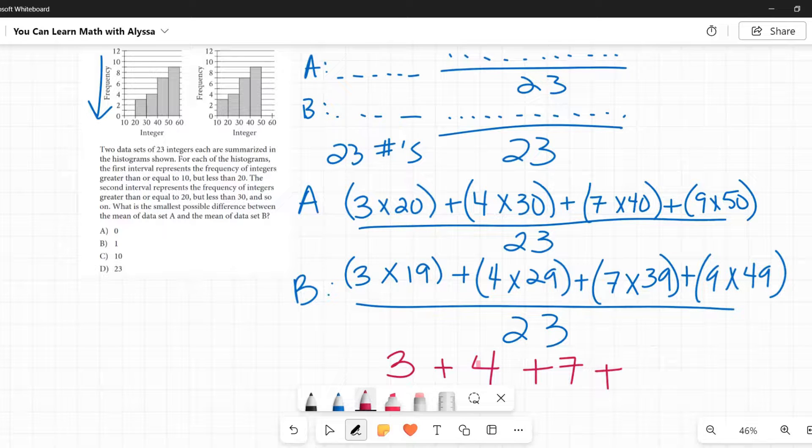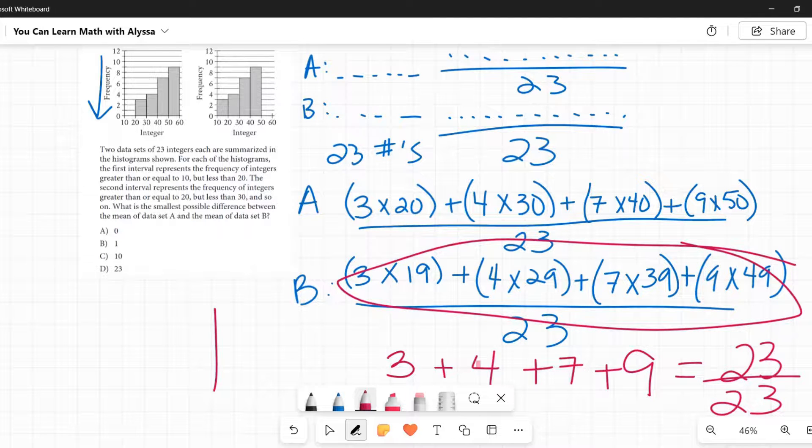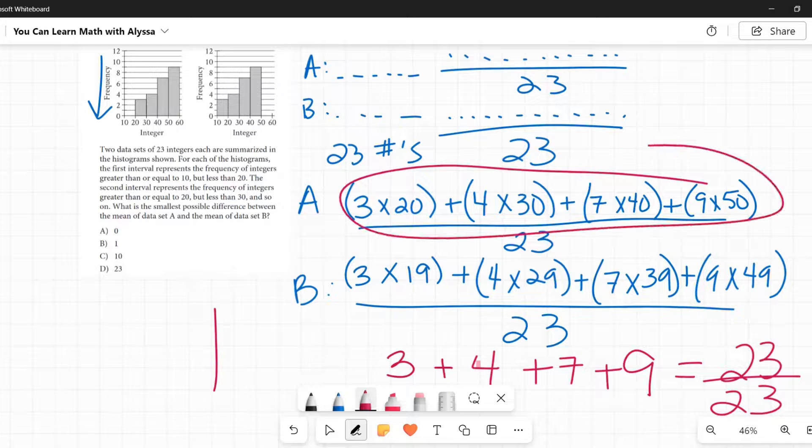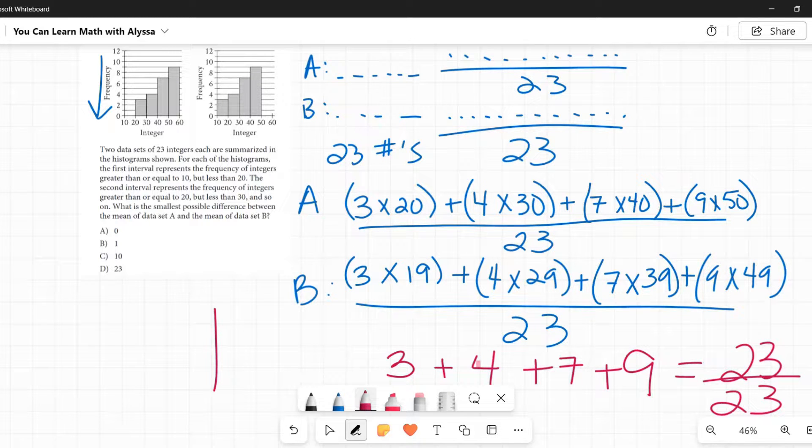So this number on the bottom is 3 plus 4 plus 7 plus 9 smaller. And if you add that up, you get 23. And what is 23 divided by 23? 1. So this number on the bottom is 23 smaller than this on the top. And 23 divided by 23, because we're going to divide both numbers by 23, is 1. That's B.